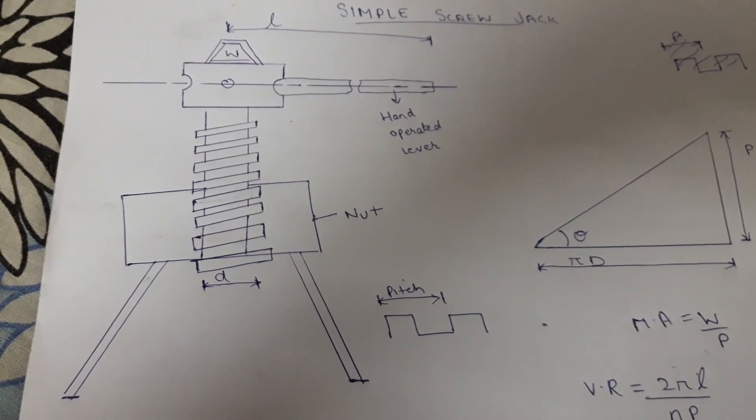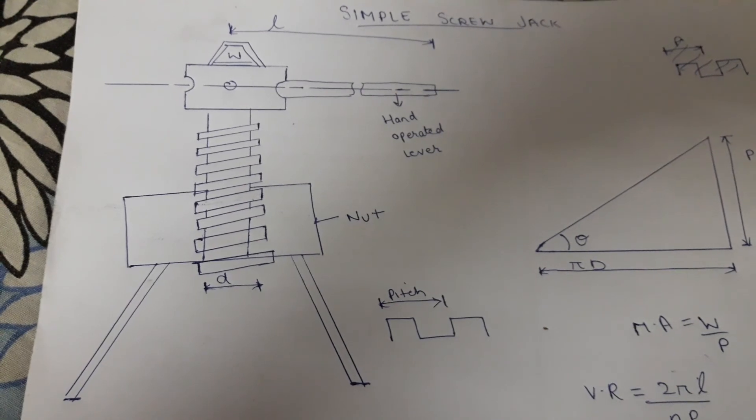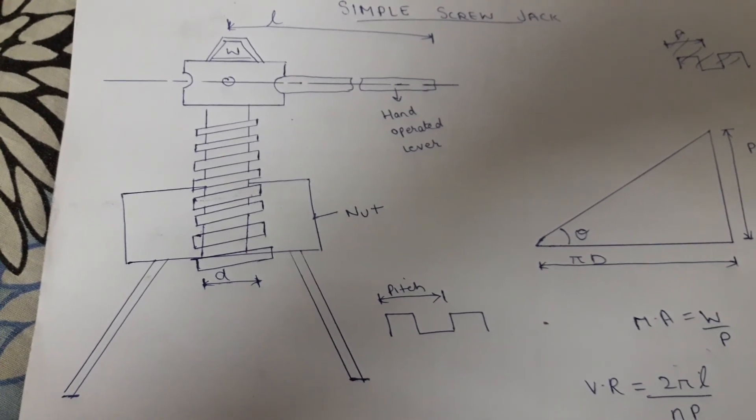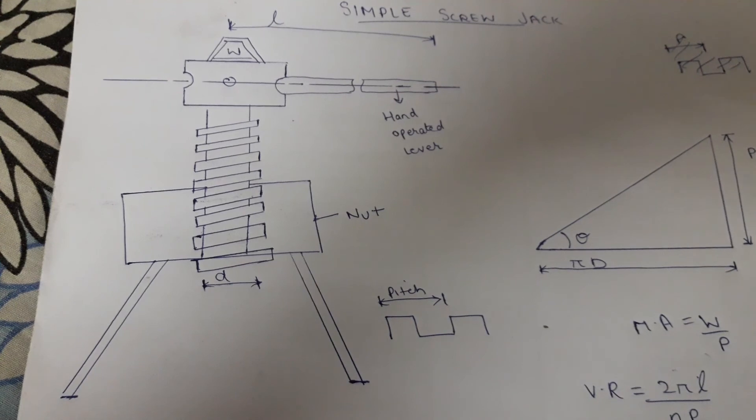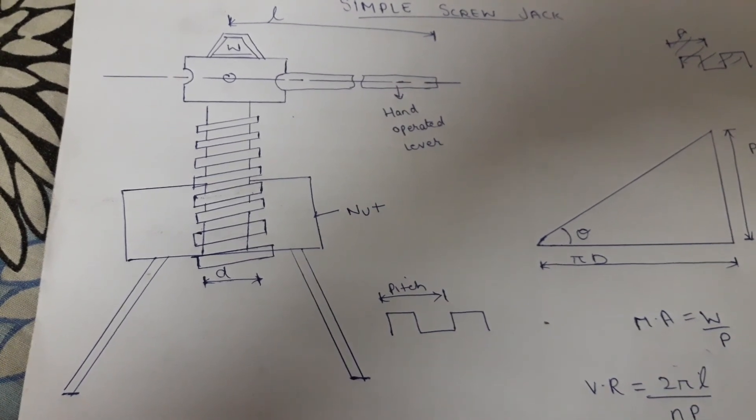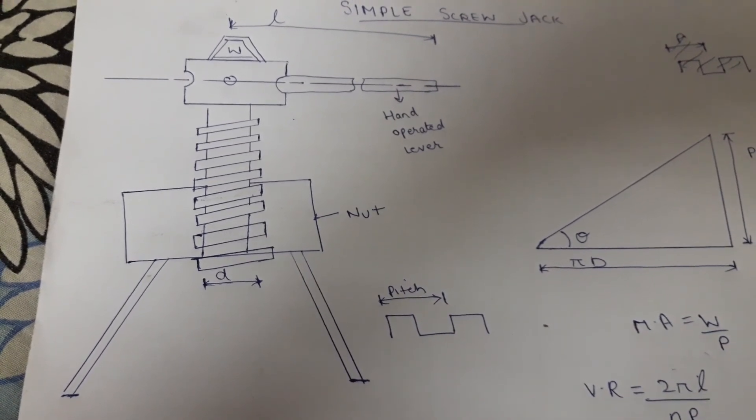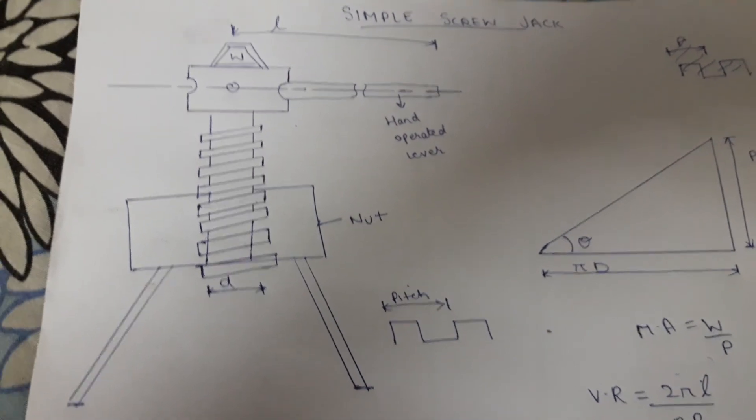Simple screw jack is a lifting machine which is used to lift heavy loads by the application of comparatively very small effort. In daily life we use simple screw jack for lifting the vehicle such as car for the changing of tires.